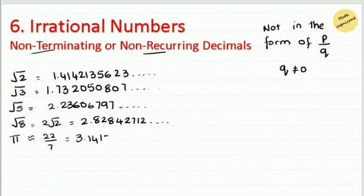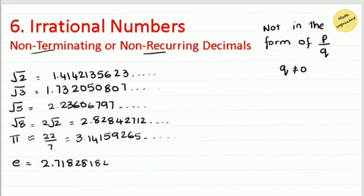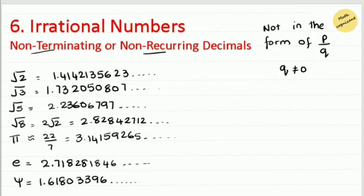Even pi (π), though we often use the approximation 22/7 or 3.14, has an actual value that is never-ending and non-terminating. Euler's number e = 2.718281846... and the golden ratio φ = 1.6180339... also go on forever. All of these are examples of irrational numbers — non-terminating and non-repeating.